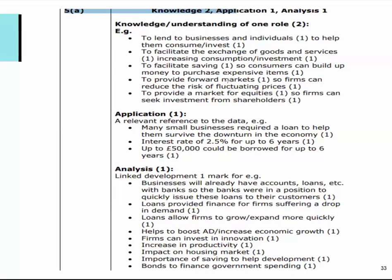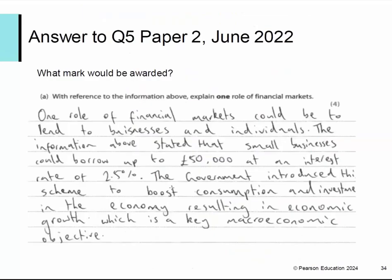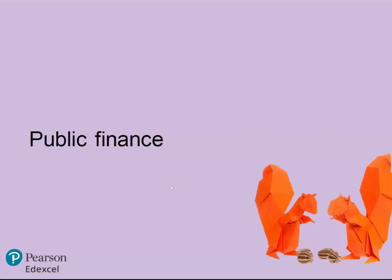The activity here is a four-mark question: in 2020, the UK government introduced a loan scheme to help small businesses survive the downturn — small businesses could borrow up to £50,000 at 2.5% for up to six years, with the government guaranteeing 100% of the loans and only minimal checks made on borrowers. You can see in the mark scheme: two marks for knowledge about lending application using the data from the question, then a bit of analysis — loans provide finance for businesses suffering a drop in demand — and the answer shown here gets all four marks in just a few lines.